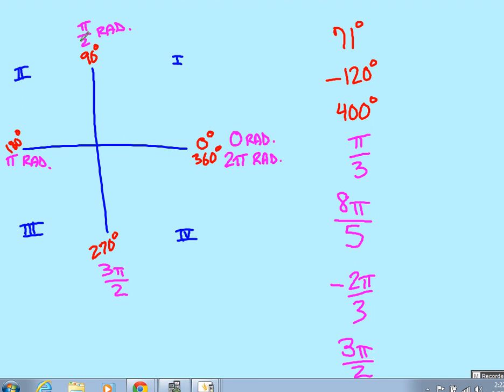Now, what we want to start with is, let's say that we have an angle that is 71 degrees. What quadrant would that lie in? Well, 71 is between 0 and 90, so that means that should be in here, in quadrant 1.